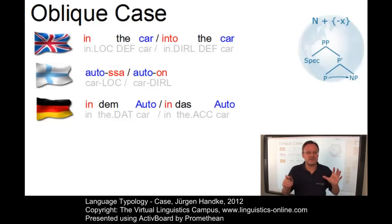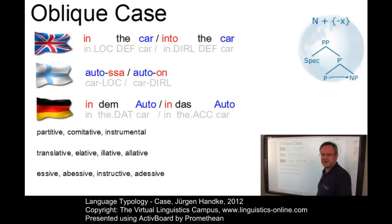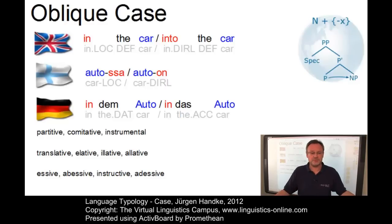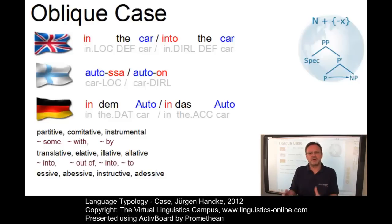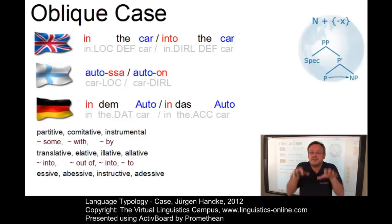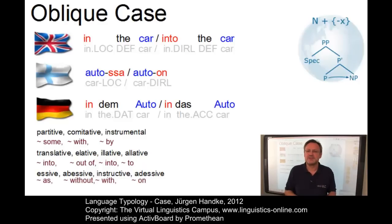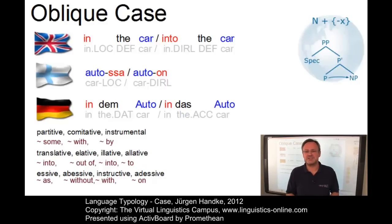Oblique cases denote semantic content that is not dependent on structural roles. Here is a collection of semantic relationships expressed by languages — either by prepositions, postpositions, or by case: the partitive ('some car'), the commutative ('with a car'), the instrumental ('by means of'), and locative/directional relationships such as the translative ('into the car'), the elative ('out of the car'), the illative ('into'), the allative ('to'), the essive ('as a car'), the abessive ('without'), the instructive ('with'), and the adessive ('on').